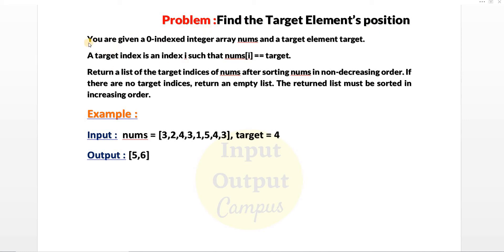You are given a zero-indexed integer array nums and a target element target. A target index is an index i such that nums[i] equals target. You have to return a list of the target indices of nums after sorting nums in non-decreasing order.